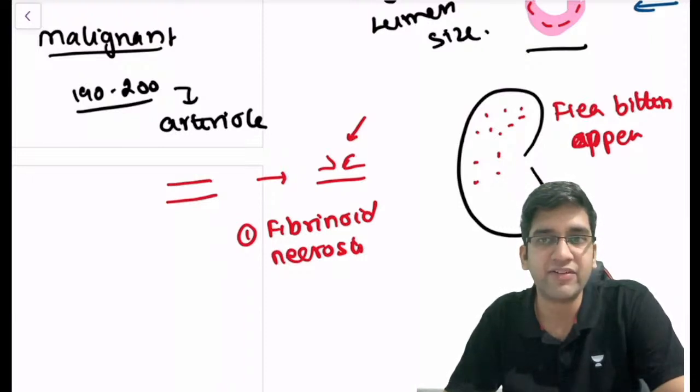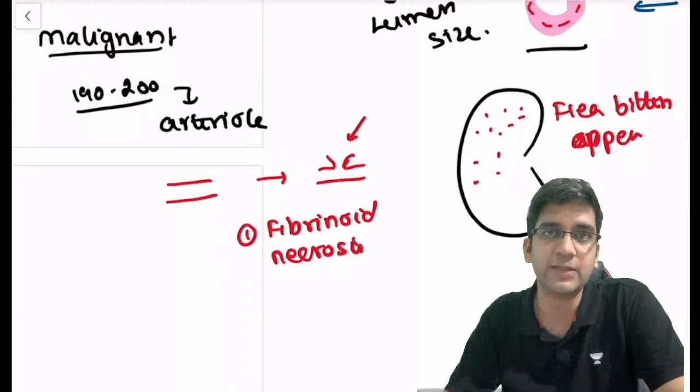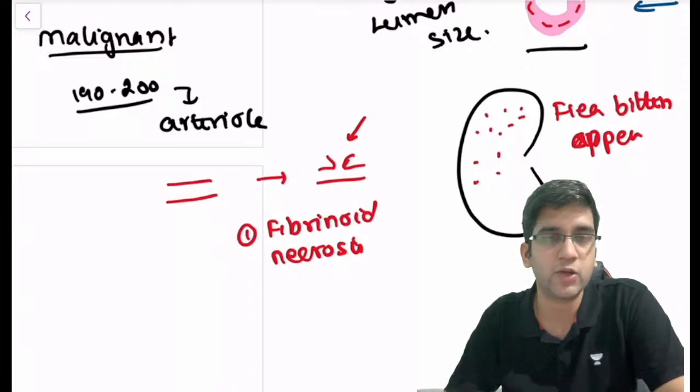Let's assume the patient is having malignant hypertension — if this is true, the entire arteriole of the kidney will rupture, and if it ruptures, I have a very difficult problem.